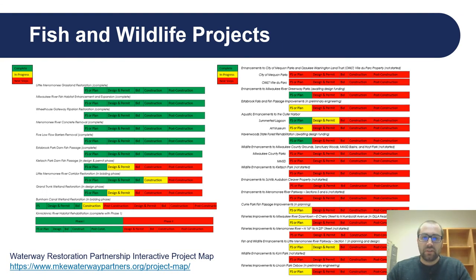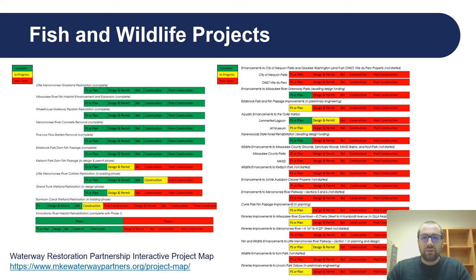Let's quickly switch topics to the fish and wildlife projects within the AOC, moving away from contaminated sediment. There are a total of 26 projects within the AOC addressing a variety of different fish and wildlife impairments, some of which have already been completed, some are underway, and some have yet to begin. The status chart shows green for completed phases, yellow for those in progress, and red for phases not yet started. There is an interactive map available through the AOC's Waterway Restoration Partnership webpage for a deeper dive into each project, but for this presentation I'm going to focus in on one of those projects.